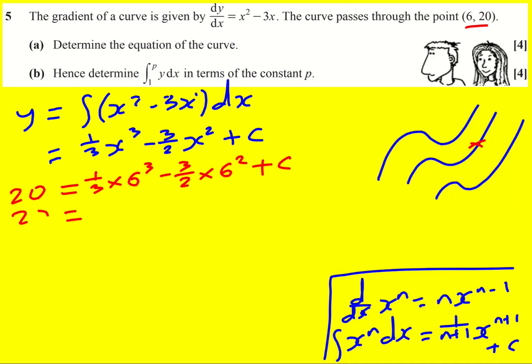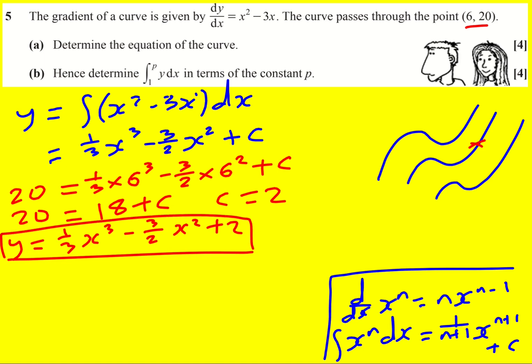So we get 18. So 20 equals 18 plus c, c equals 2. And therefore y equals 1 third x cubed minus 3 over 2 x squared plus 2. And that was part a.